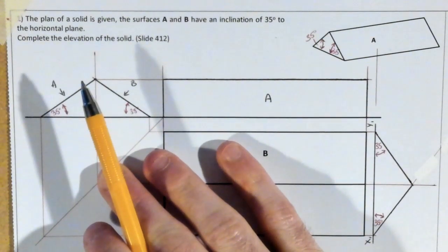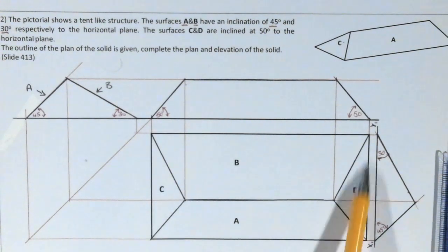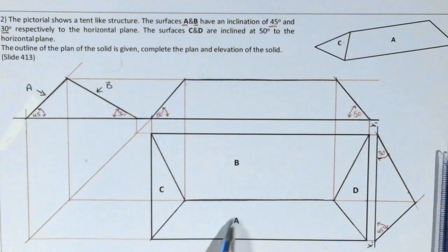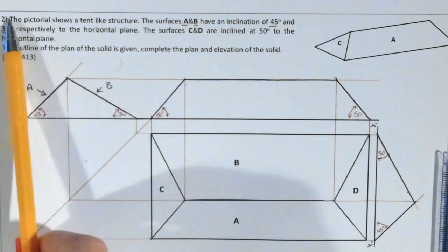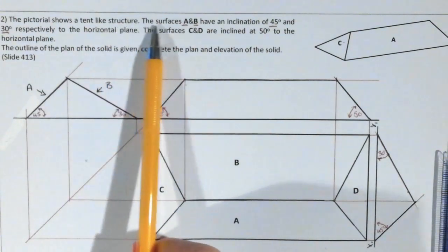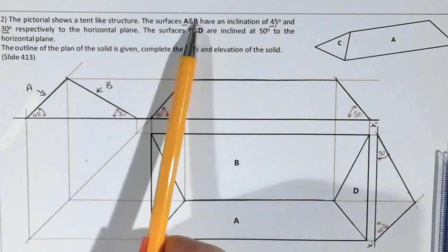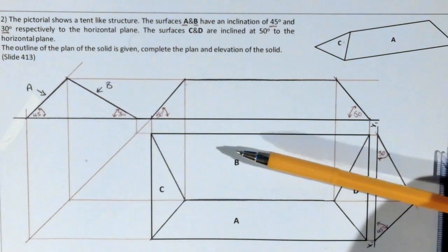Moving on to another question with slightly more difficulty. We were given a box showing the positioning of surfaces — no lines, just the positions of surfaces A, B, C, and D. We had to complete the elevation, end elevation, and auxiliary view. The question describes a tent-like structure where surfaces A and B have inclinations of 45 degrees and 30 degrees respectively to the horizontal plane.